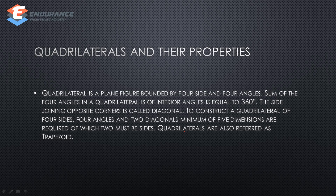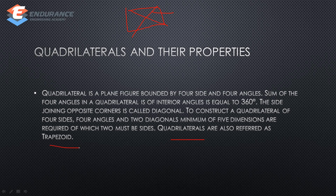If you add the four angles of a quadrilateral, you will have 360 degrees. If you join the opposite corners, those lines are called diagonals. To construct a quadrilateral, you will need 4 sides and 4 angles — a total of 5 dimensions. You will also encounter the trapezoid in quadrilaterals.